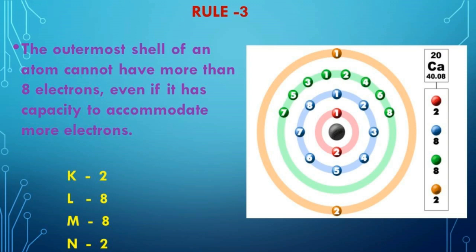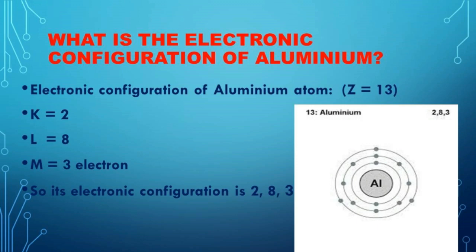The electronic configuration of aluminium: in the first shell (K) there are 2 electrons, second shell (L) has 8 electrons, and the third shell (M) has 3 electrons. So the electronic configuration of aluminium, with atomic number Z = 13, is 2, 8, 3.